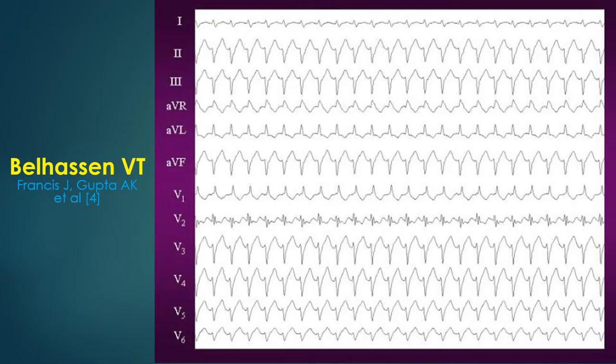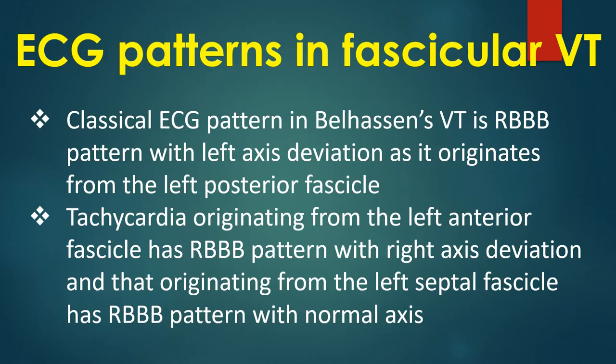12-lead ECG of idiopathic fascicular ventricular tachycardia shows the classical right bundle branch block pattern with left axis morphology, suggestive of posterior fascicular origin. Classical ECG pattern in Belhassen's VT is right bundle branch block pattern with left axis deviation, as it originates from the left posterior fascicle.